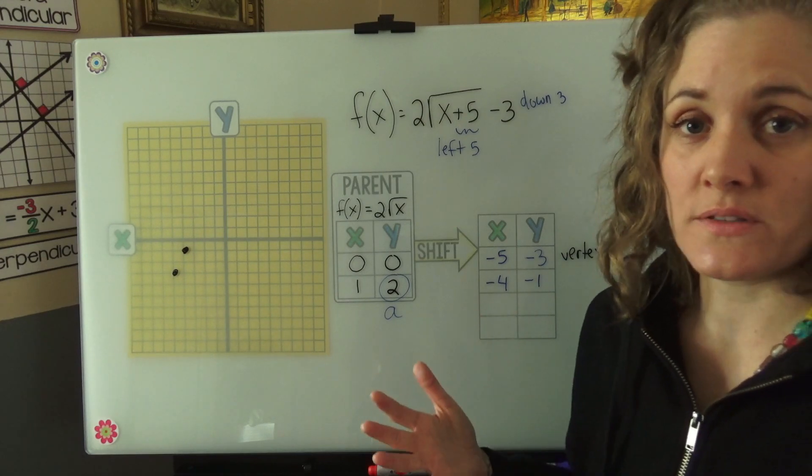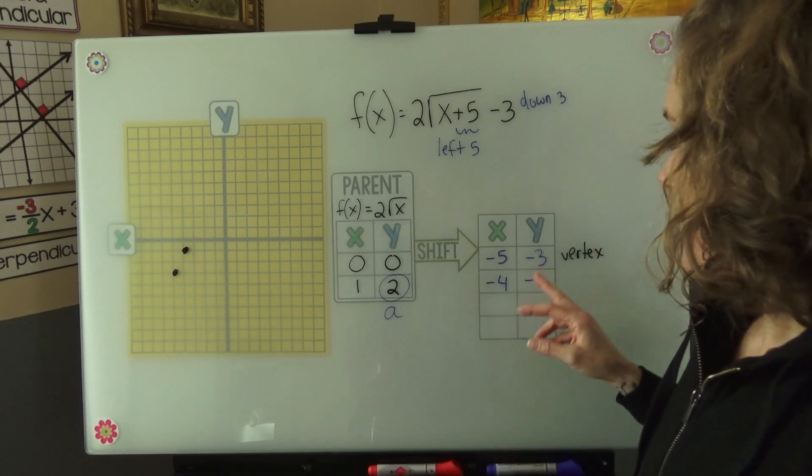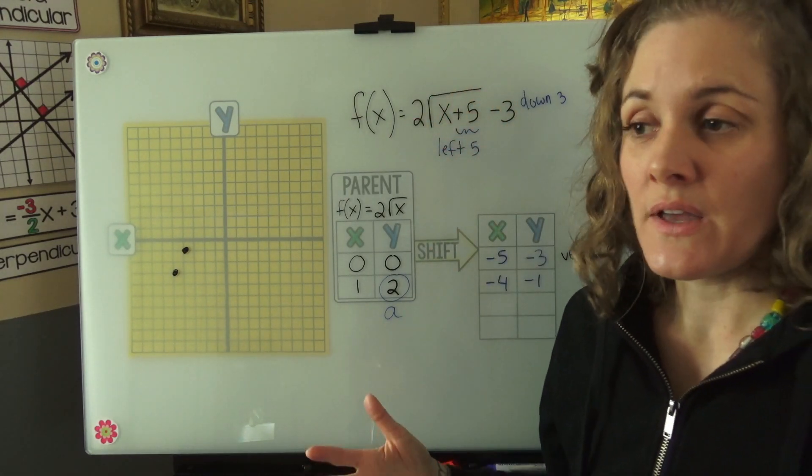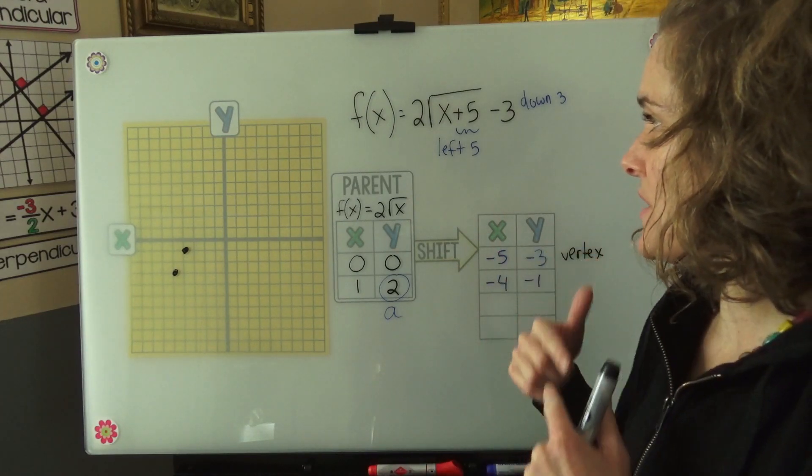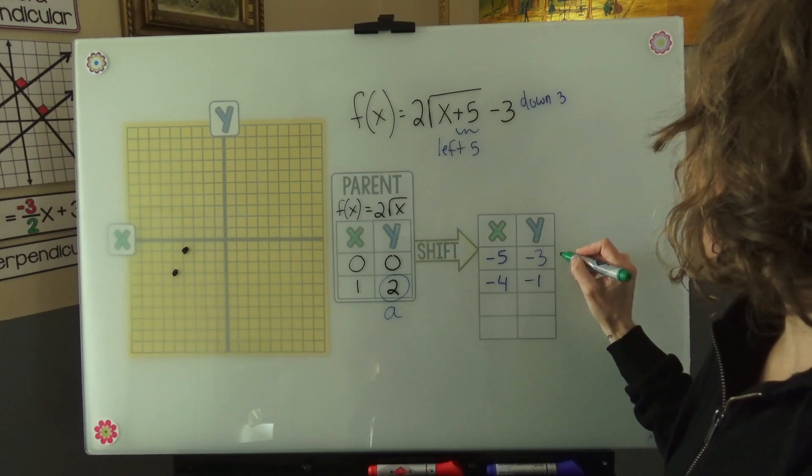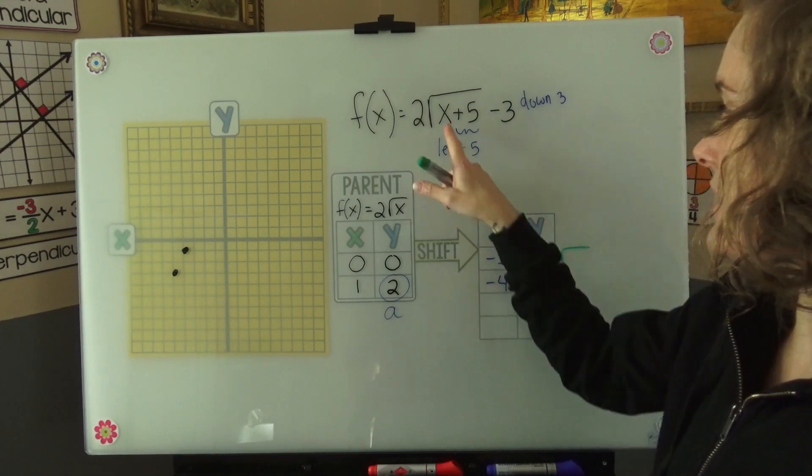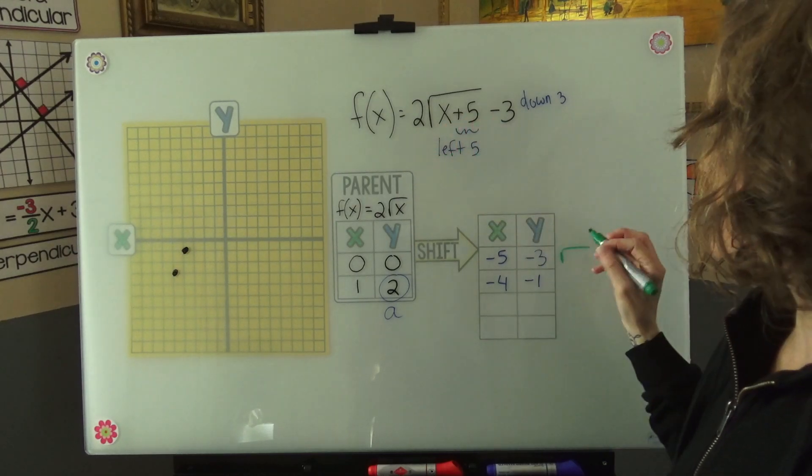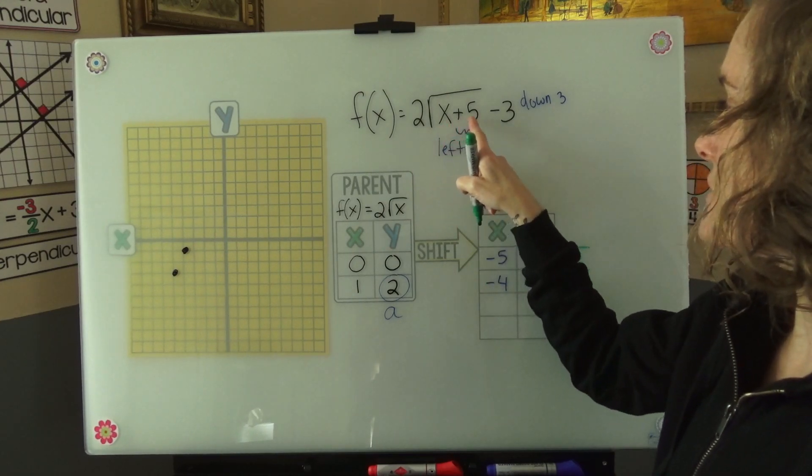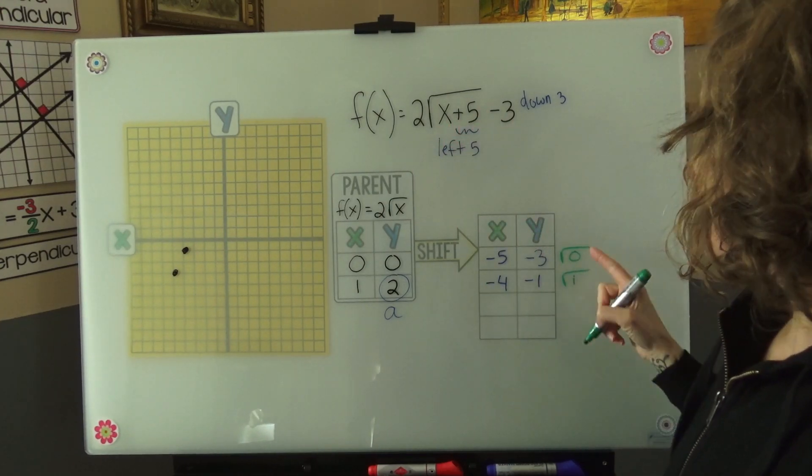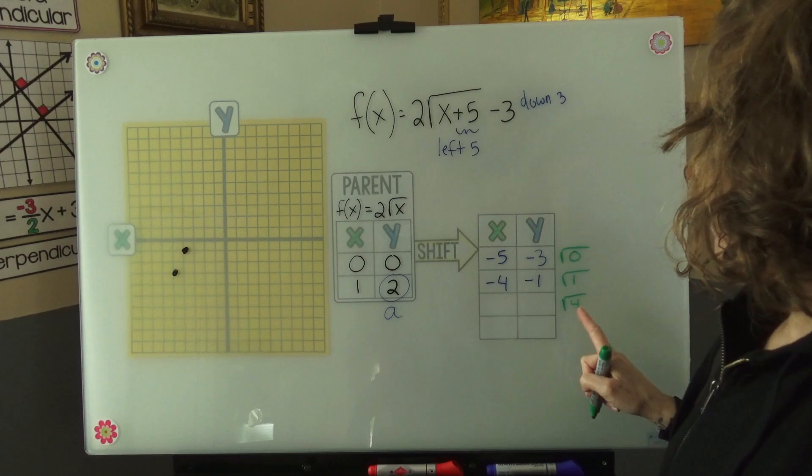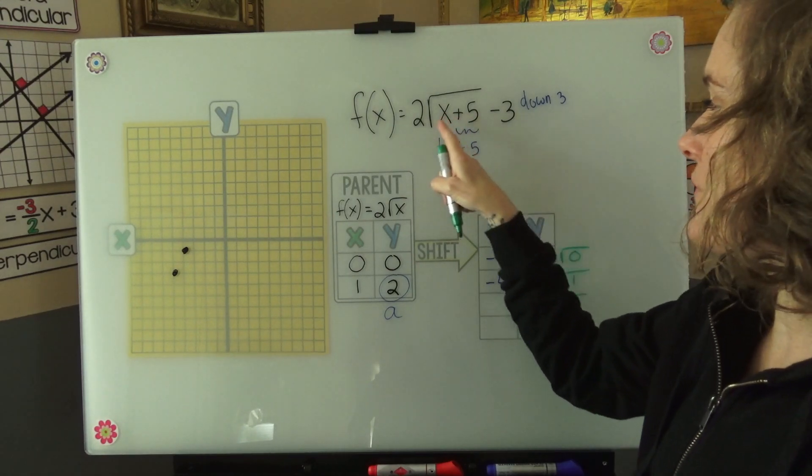Now how do we go about getting more points for our graph? Well, radicals are a little funky because they have the square root and not every number has an easy square root. So we have to think in terms of finding the perfect squares. When we plugged in negative 5, negative 5 plus 5 was 0. When we plugged in negative 4, negative 4 plus 5 was 1. 0 is a square number. 1 is a square number. Our next square number is 4.